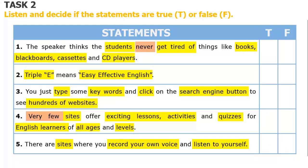Now, listen to a teacher giving instructions on how to use online English language materials and check your predictions. I guess sometimes you may feel disappointed by your bad grades and get tired of things like books, blackboards, cassettes, and CD players. No worries! I'll show you how to learn English easily and effectively just with your fingertips. Have you heard of Triple E? It means easy, effective English. How can learning English be easy but effective? The secret is so simple — use electronic devices to access and take advantage of online English language materials.